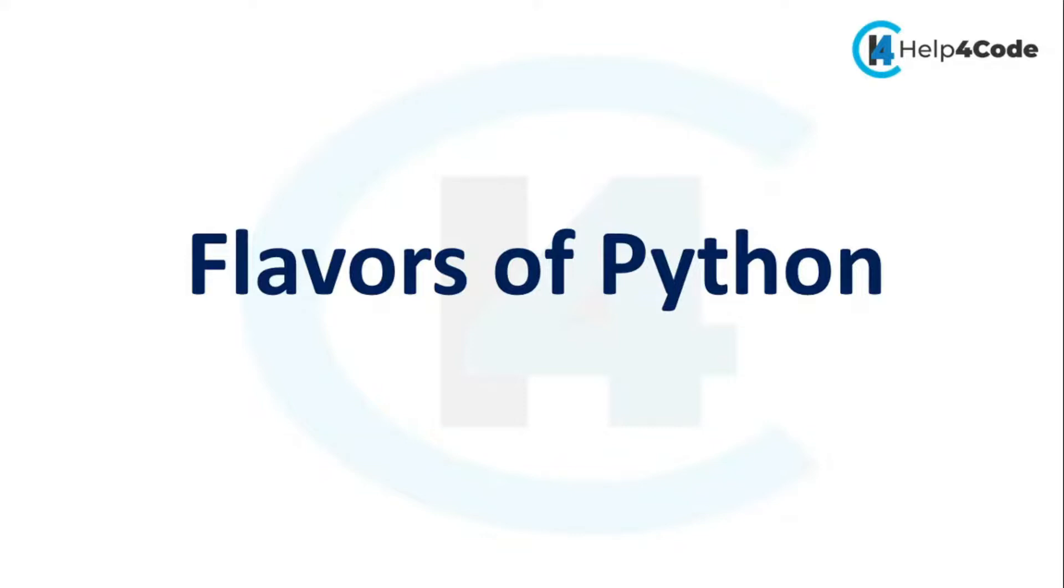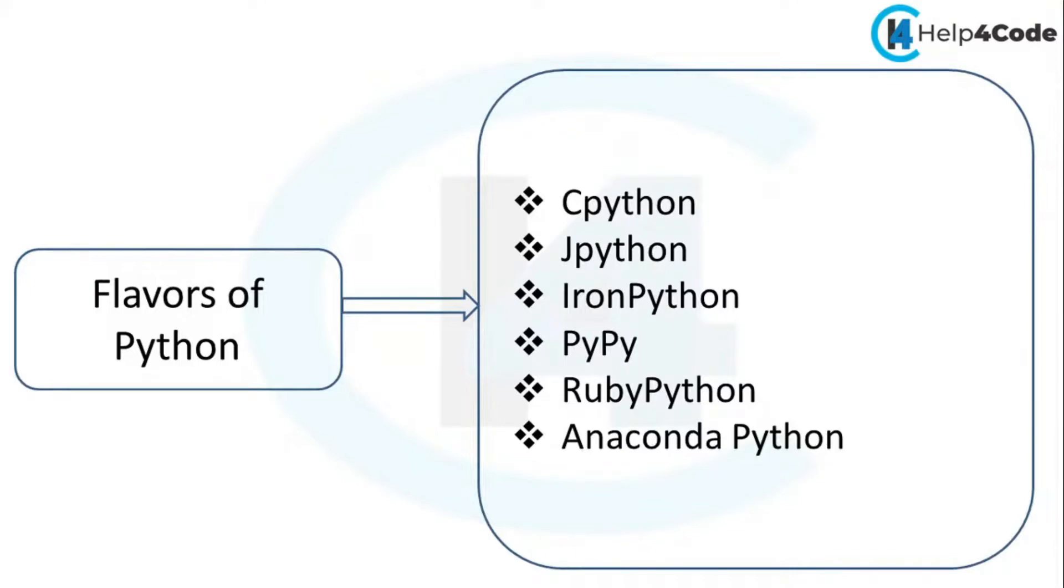Let's discuss the flavors of Python. What do we mean by flavors of Python? We have some flavors of Python: CPython, JPython, IronPython, PyPy, RubyPython, and Anaconda Python.